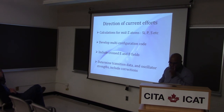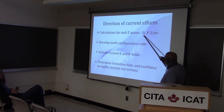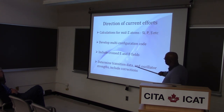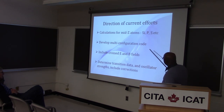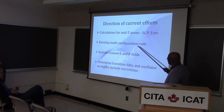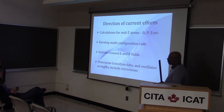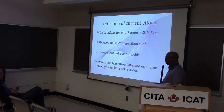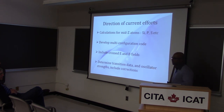The current efforts I have ongoing are trying to get at the energy levels of silicon, phosphorus, and sulfur, and also to get transition data and oscillator strengths for all these different atoms. I'm also trying to develop a multi-configuration version of this code, and I'm toying around with adding crossed E and B fields to see what happens to the atom. Those are the directions in which I'm currently pursuing work.